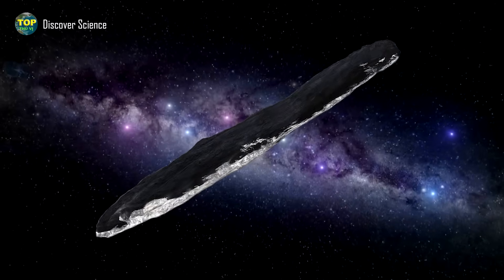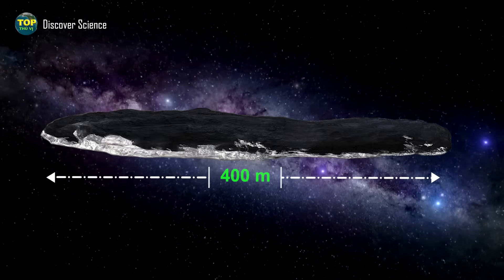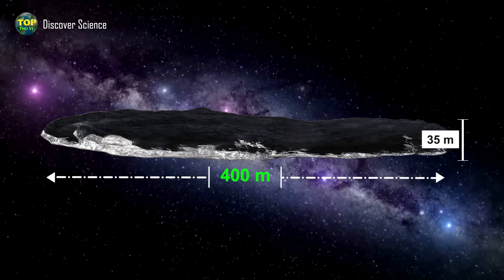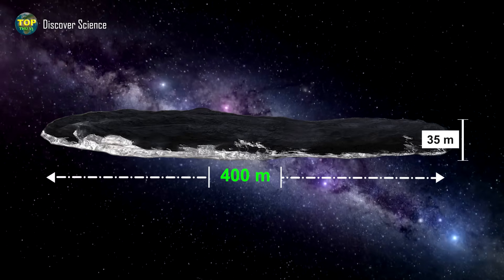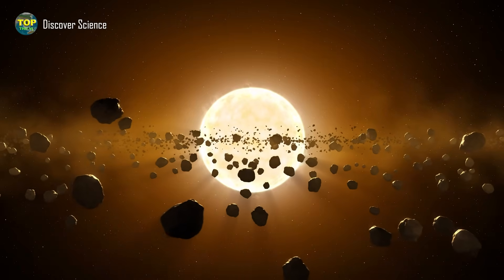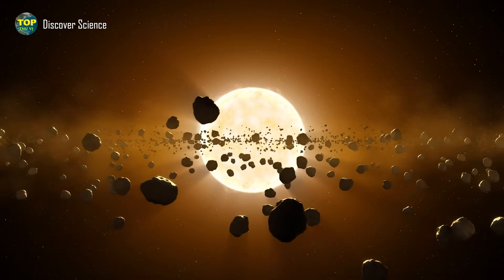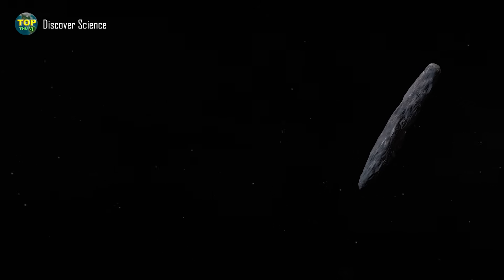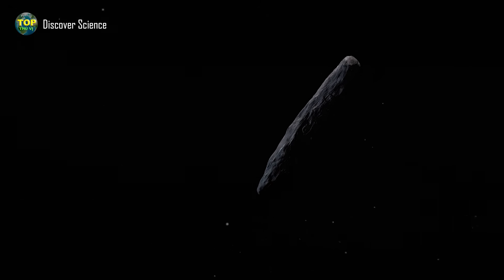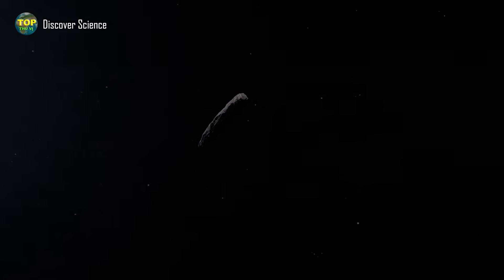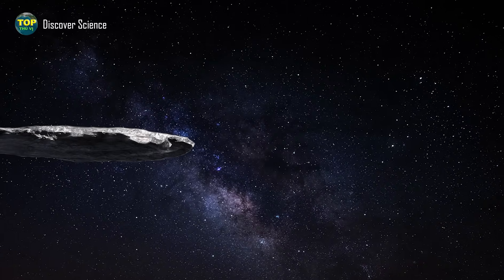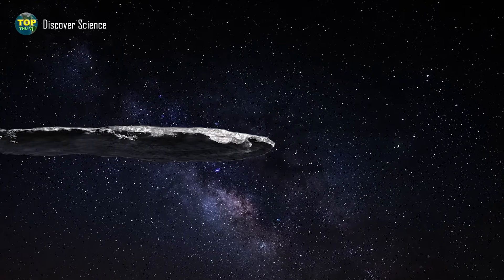First is the size. 'Oumuamua is estimated to be about 400 meters long and roughly 35 meters wide. That means its length is about 10 times its width, which is unusually long. Up until now, the longest objects in our solar system have never had a length more than three times their width, but 'Oumuamua's length-to-width ratio of 10:1 suggests that it was formed by a unique process, very different from the objects in our local solar neighborhood. As for its shape, it has often been described as looking like a cigar or possibly flat like a pancake.